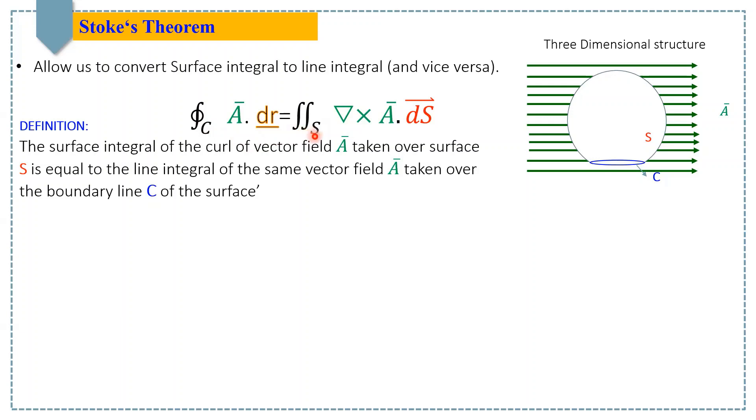Suppose there is a vector field in some space, and that vector field is given on the right side. Suppose there is a three-dimensional open surface S that has the boundary line C. This three-dimensional structure could be any type of structure. In our case, it is like an inverted pot having the boundary line C.